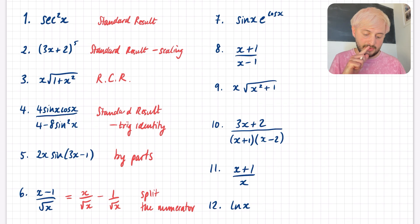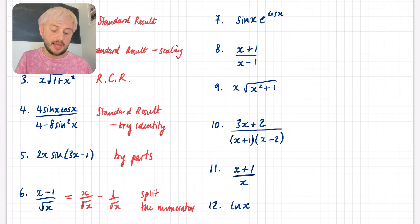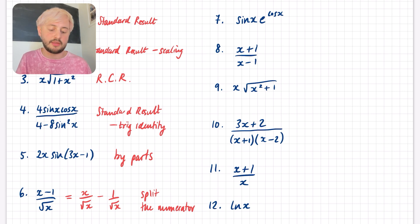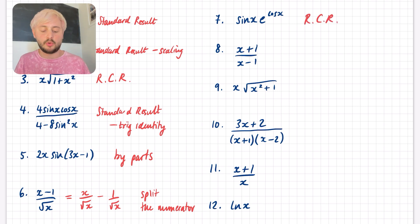Question 7: this doesn't appear to be a standard result, so always check the reverse chain rule. The sin x here is related to the derivative of e^(cos x), because e^(cos x) differentiates to −sin x · e^(cos x). So there's definitely a relationship between them, meaning this is going to be a reverse chain rule type question.